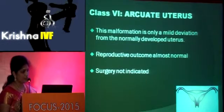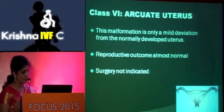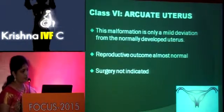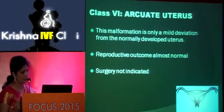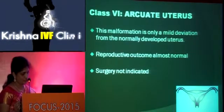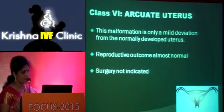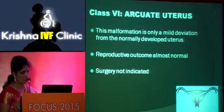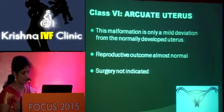Class 6 is the arcuate uterus. This malformation is only a mild deviation from the normally developed uterus. Reproductive outcome is almost normal and surgery is not indicated.